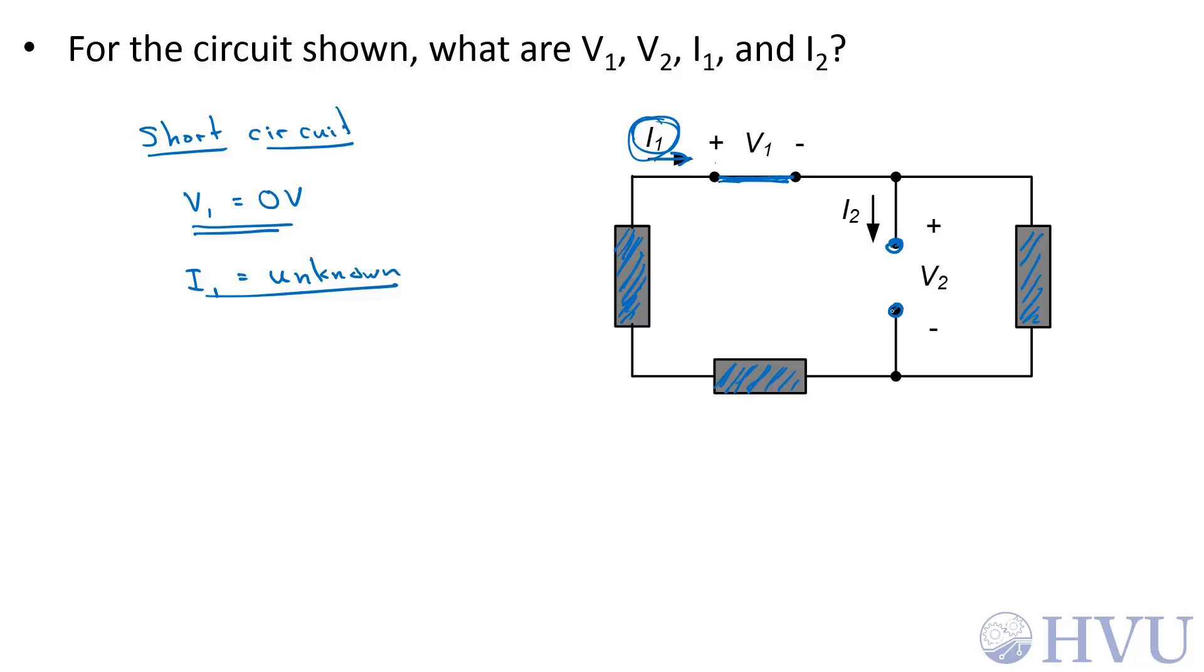Conversely, for this open circuit, the current through an open circuit, I2, is zero. You can't have any current through an ideal open circuit.